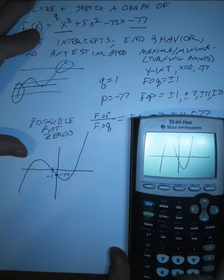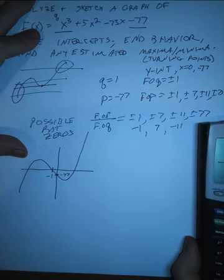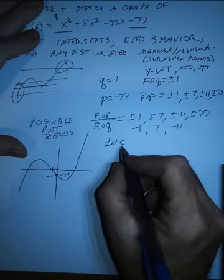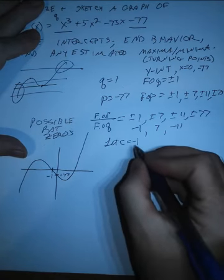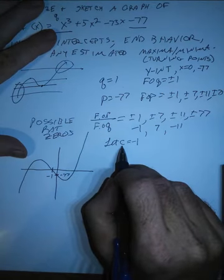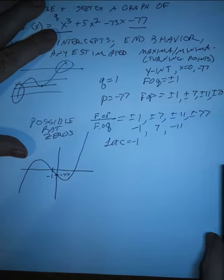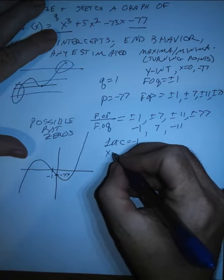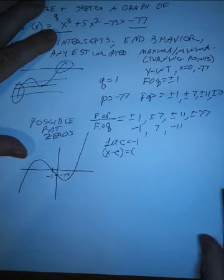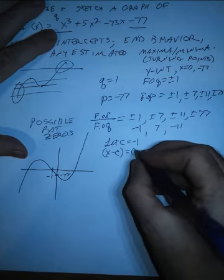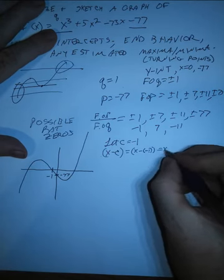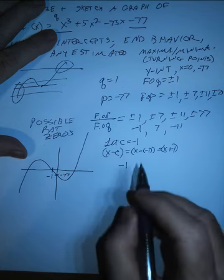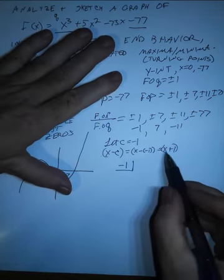All right. Now, looking at our graph, we want to check and see if maybe negative one is a zero. If I think that c is a root or a zero of the polynomial, then the remainder, when we do synthetic division, will be zero by the remainder theorem. So I want to use, if c equals negative one, the factor that's associated with it is x minus c. So the factor that would be associated with a zero of negative one would be x minus negative one, which is x plus one. So we're going to check and see if x plus one is a factor, if negative one is a zero.